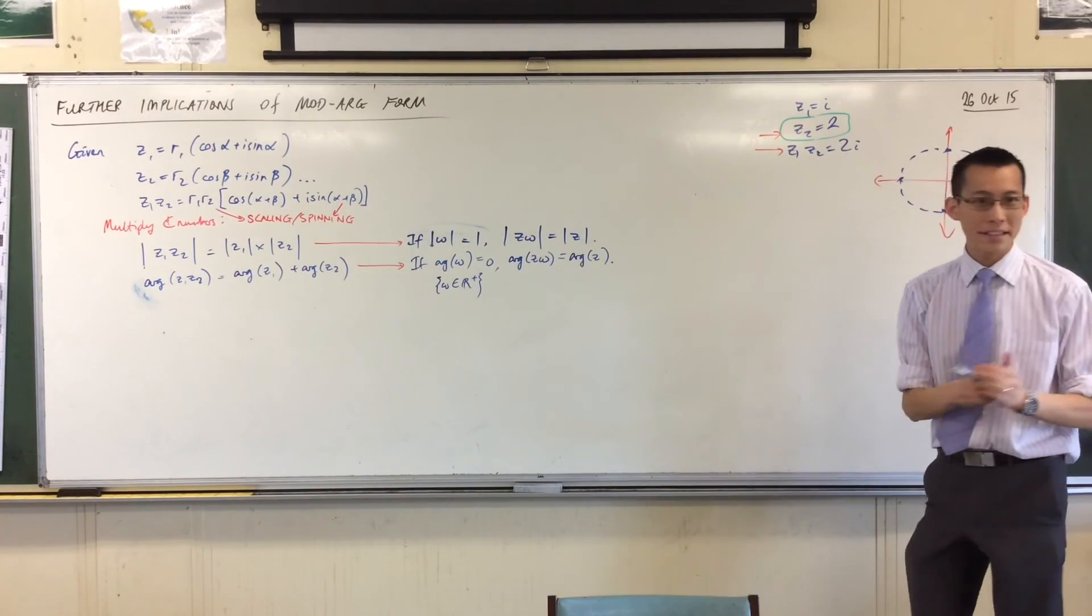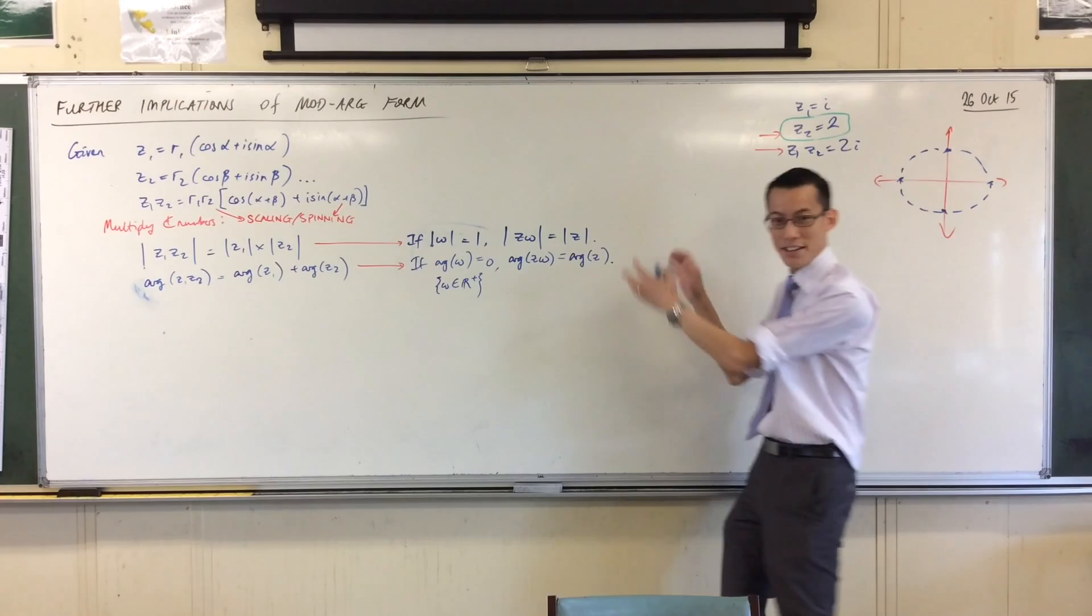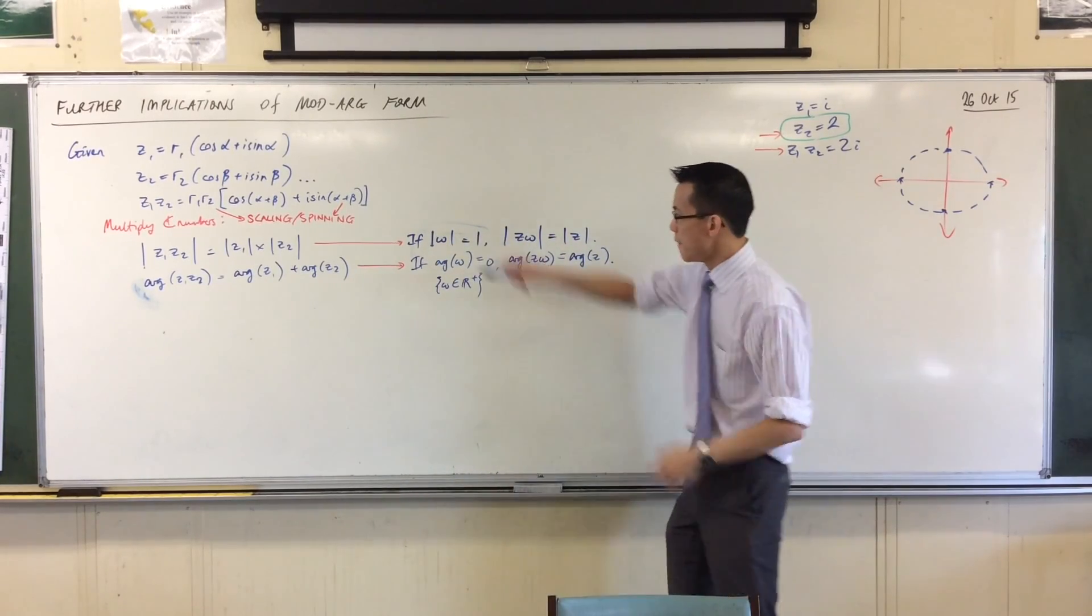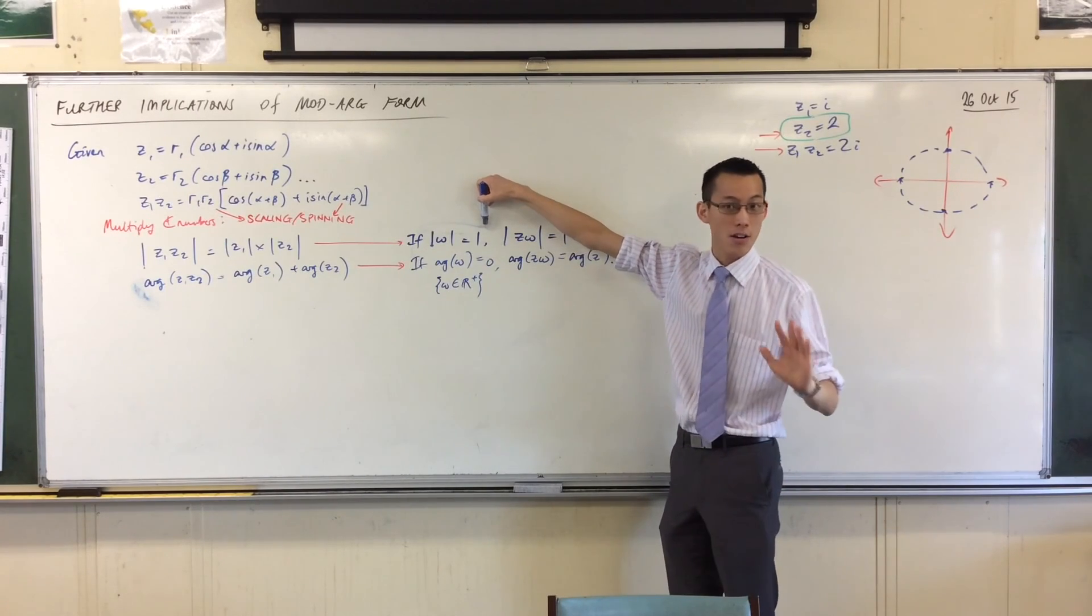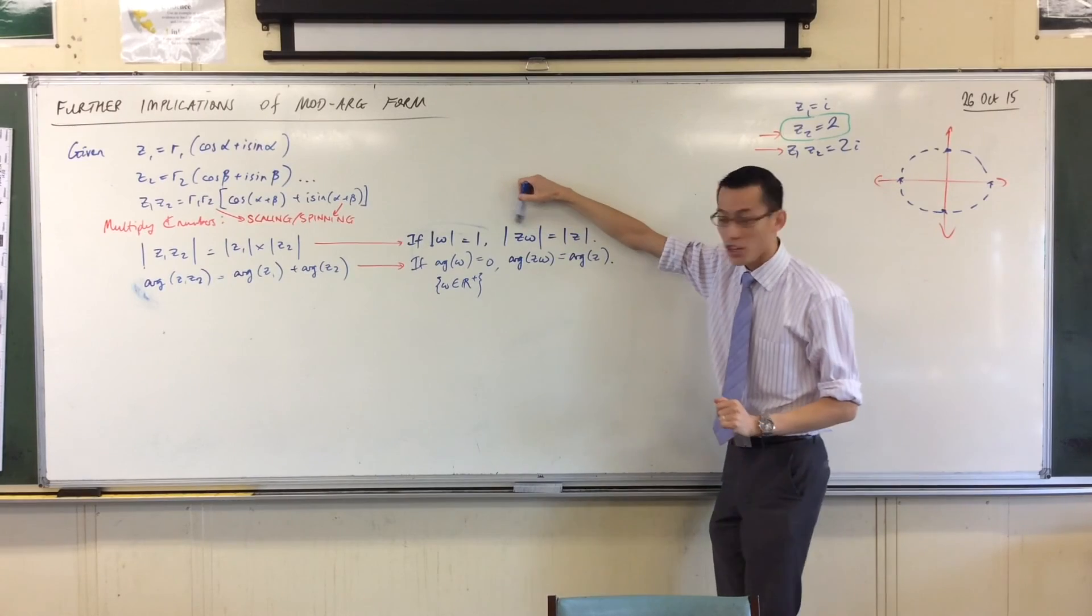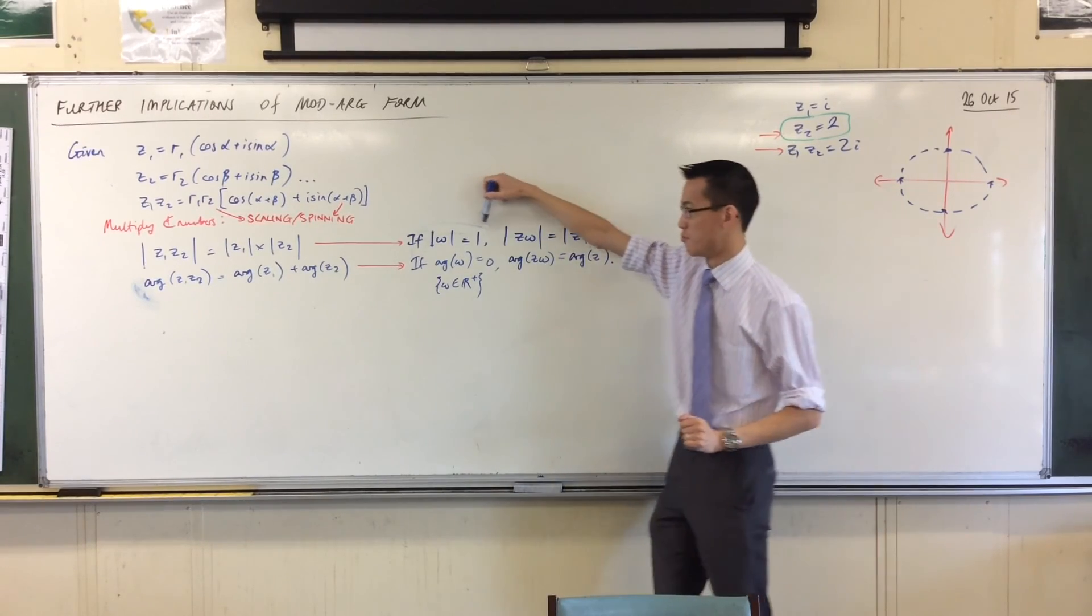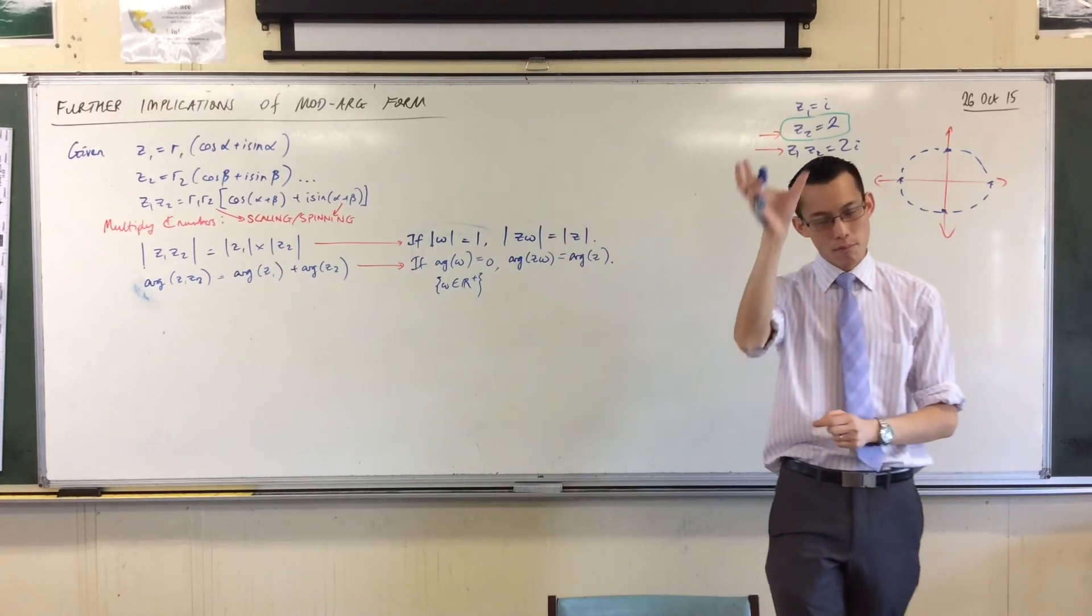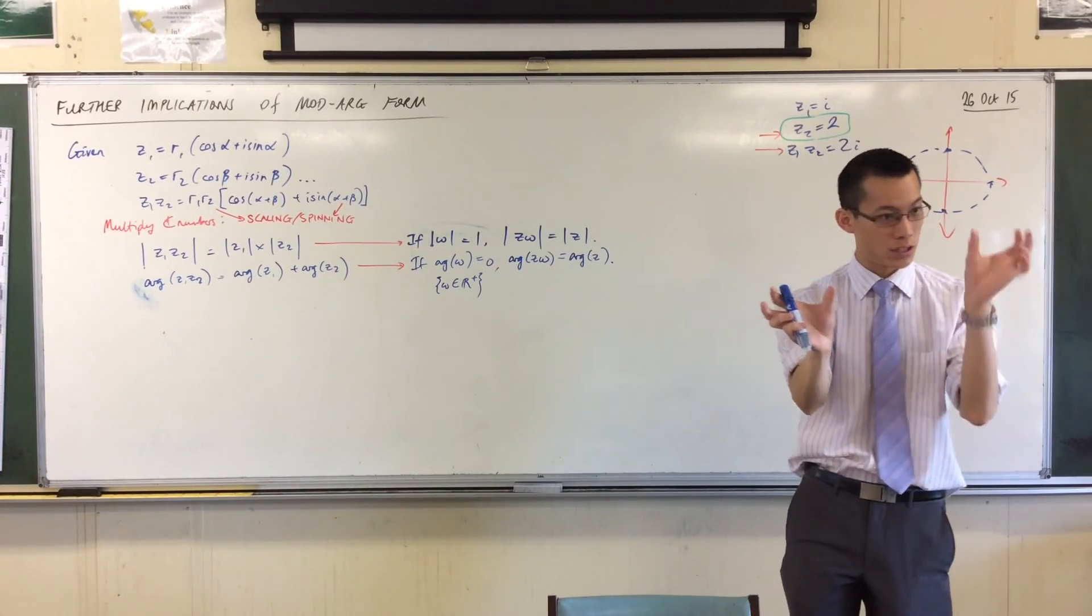Let me read that again. You're trying to see, it's getting pretty notation dense. If you've got a number and its modulus is one - that's how far away it is from the origin - then if you multiply some other complex number by that number that's one away, it won't change your modulus. The modulus of zeta times omega will still be z.